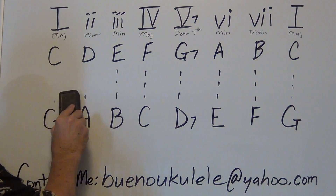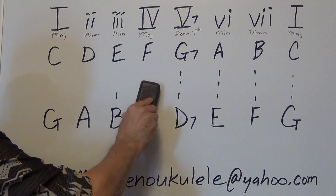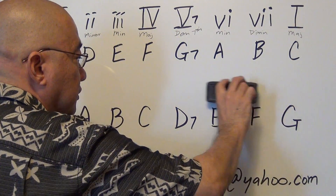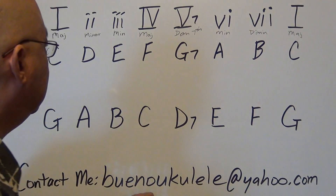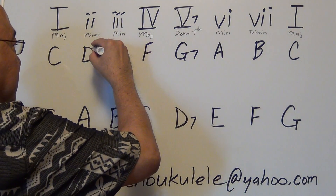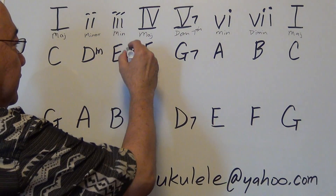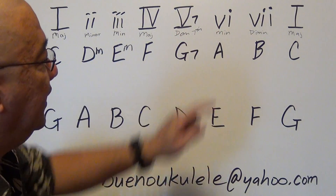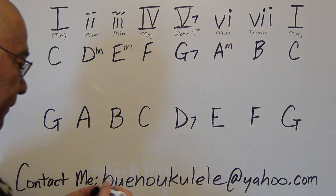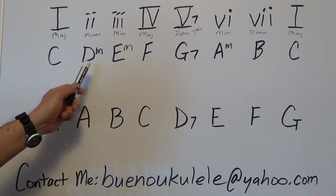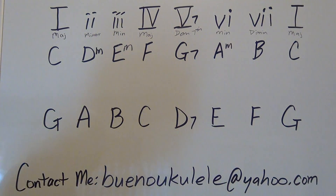We're going to write in the minor chords. Looking at the top, you'll see small Roman numeral two — it says minor. So in the key of C, that chord is a D minor. Small Roman numeral three is an E minor. Moving down, small Roman numeral six is an A minor. Up to this point in the course you've already learned D minor and A minor. You have not learned E minor yet, but it's coming up real soon.